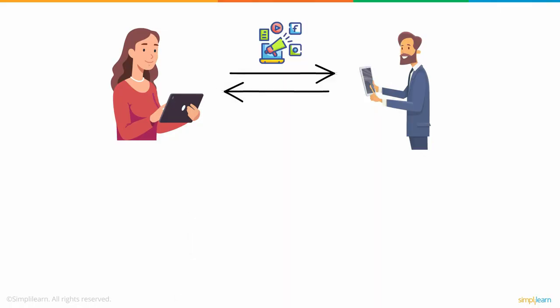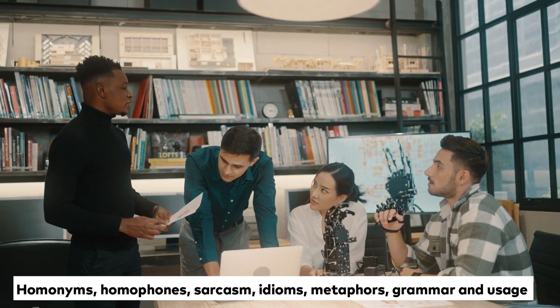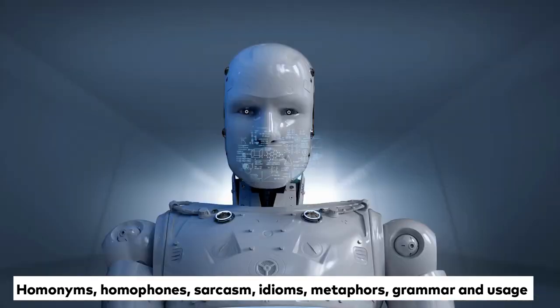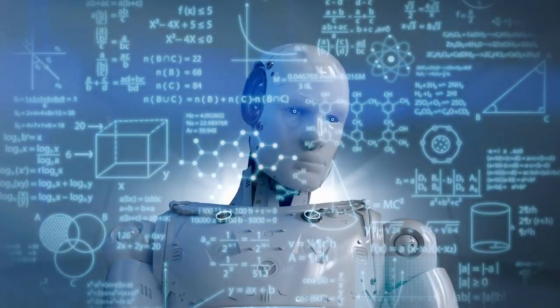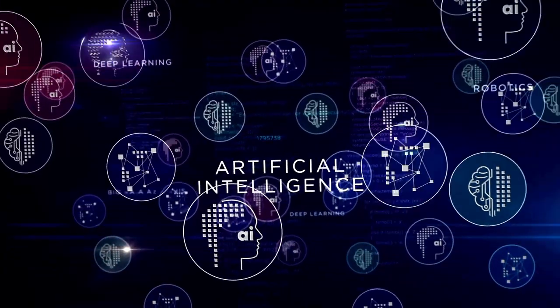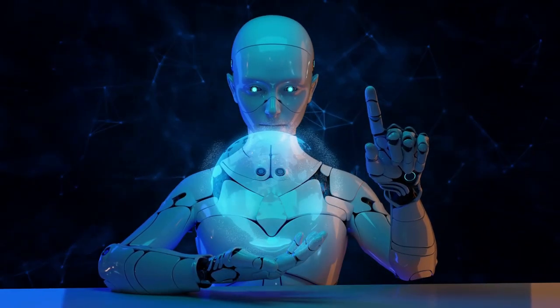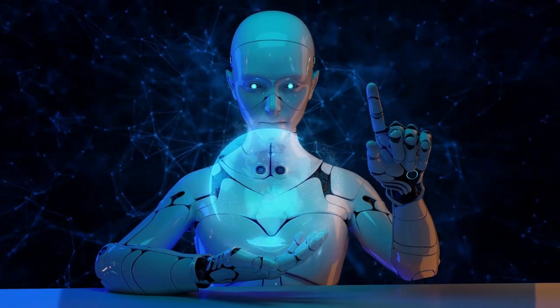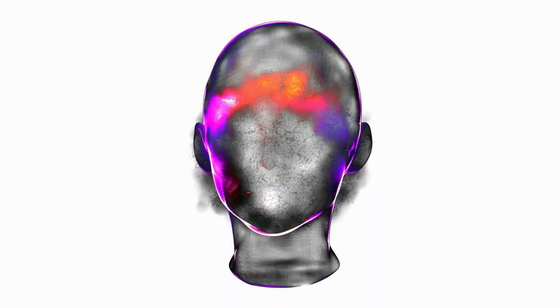NLP tasks. Human language is filled with ambiguities that make it incredibly difficult to write software that accurately determines the intended meaning of text or voice data. Homonyms, homophones, sarcasm, idioms, metaphors, grammar and usage exceptions, variations in sentence structure. These are just a few of the irregularities of human language that take humans years to learn, but that programmers must teach natural language-driven applications to recognize and understand accurately from the start, if those applications are going to be useful.